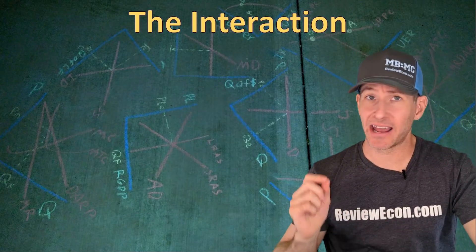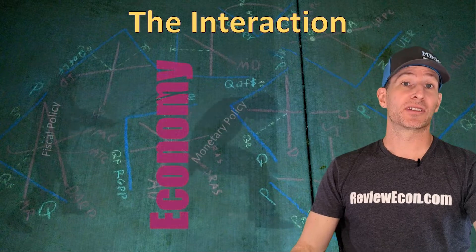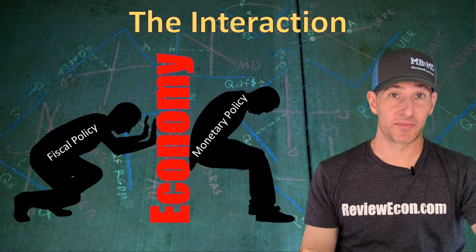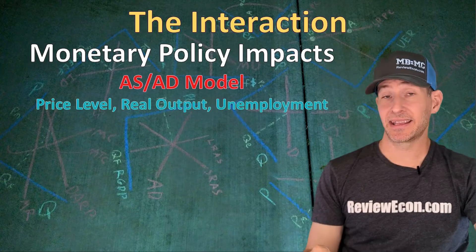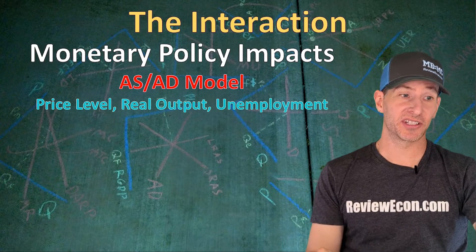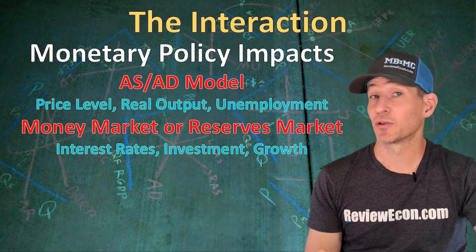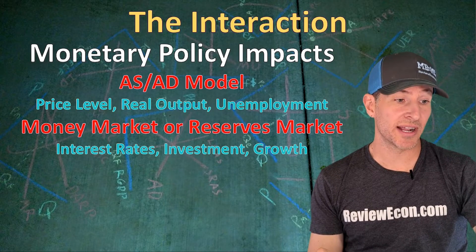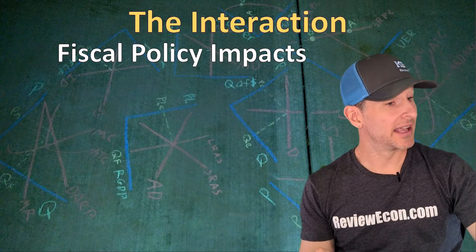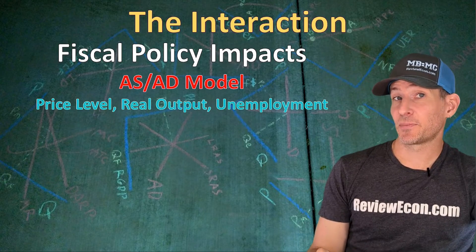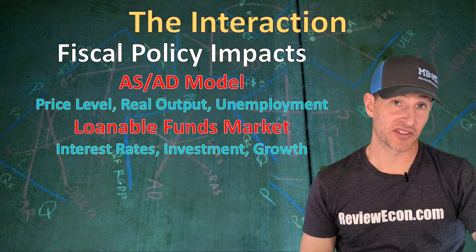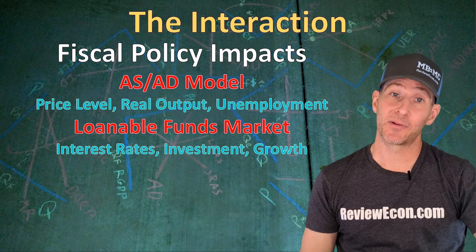When it comes to monetary policy and fiscal policy, they both move the economy around. That means they can work together to achieve the goals of full employment, stable prices, and economic growth, but they can also work as opposing forces towards the economy as well. Monetary policy impacts the AS-AD model — we see changes in the price level, real output, and unemployment. We also see in the money market, whether scarce or ample reserves, changes in interest rates, which means impacts on investment and economic growth. Fiscal policy similarly impacts the AS-AD model, and since it involves taxes and government spending, we see impacts in the loanable funds market as well. The change in the national debt that results from fiscal policy impacts interest rates, which impacts investment and economic growth.